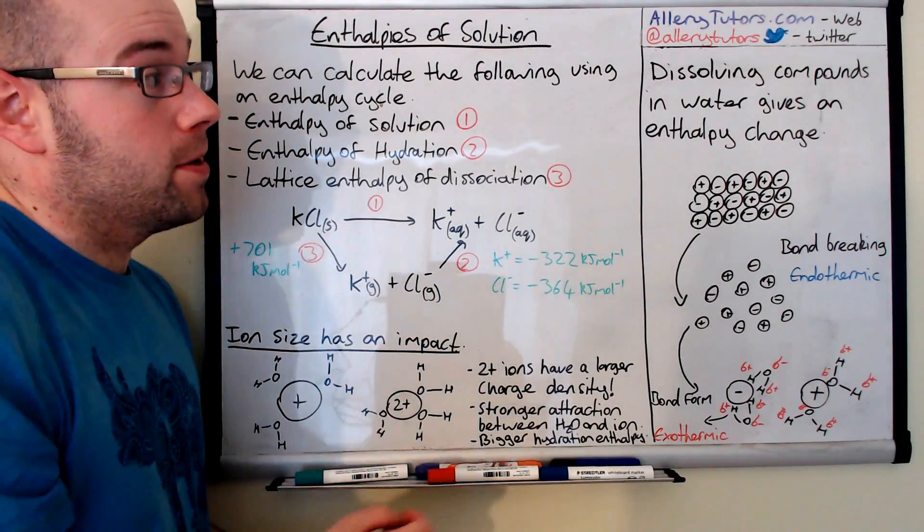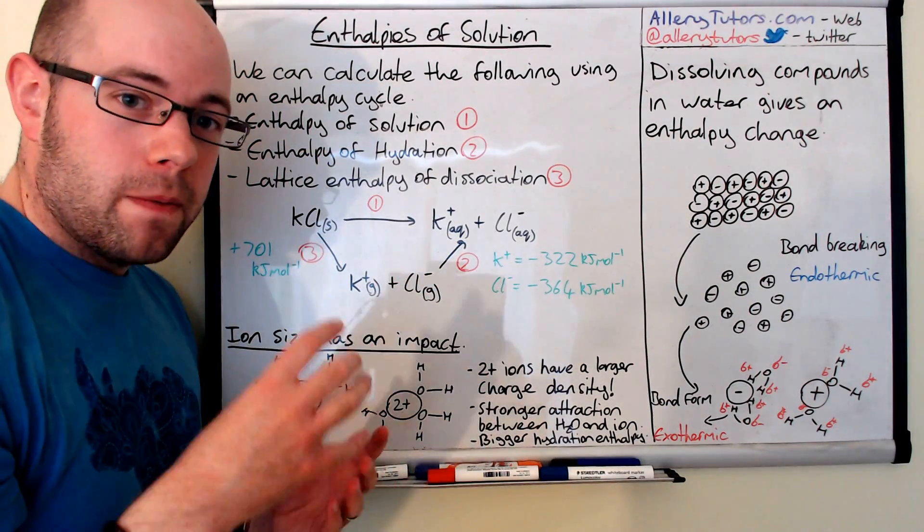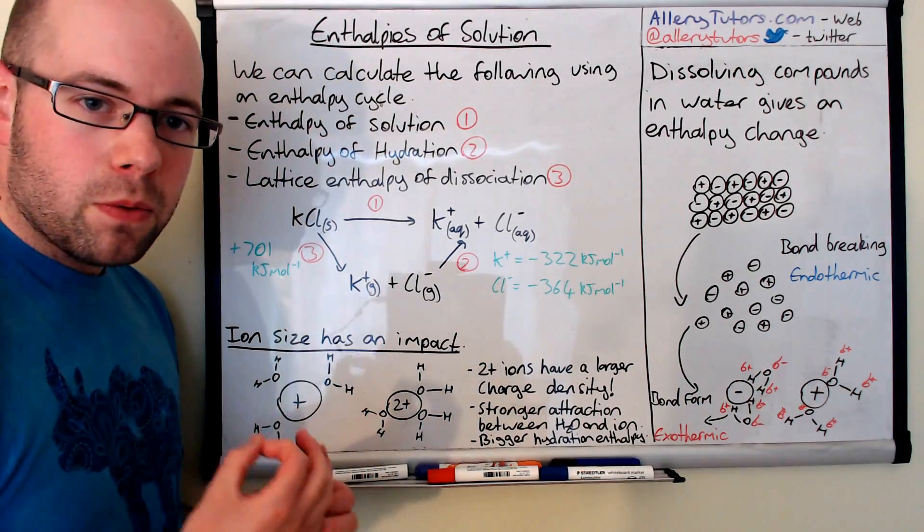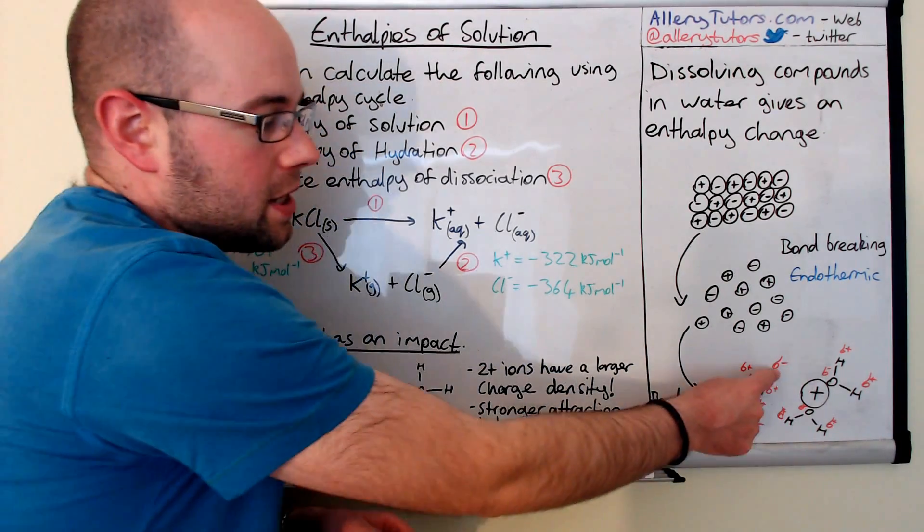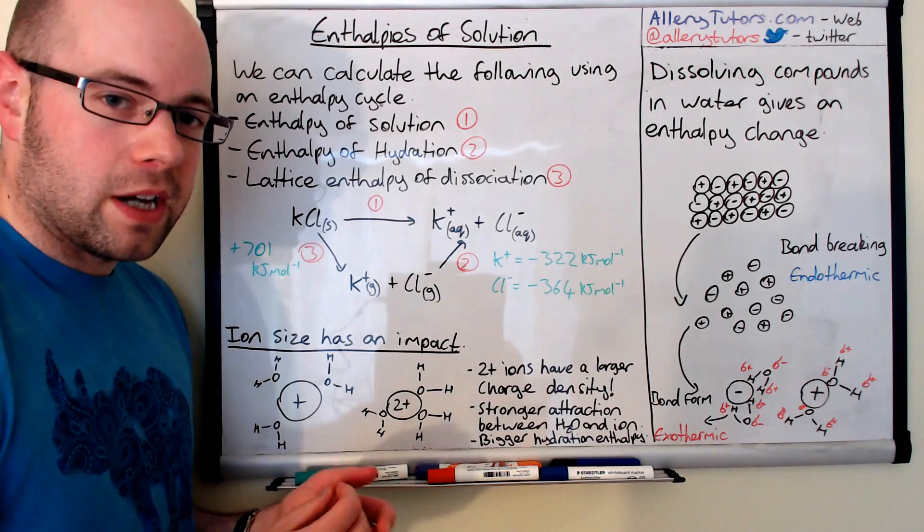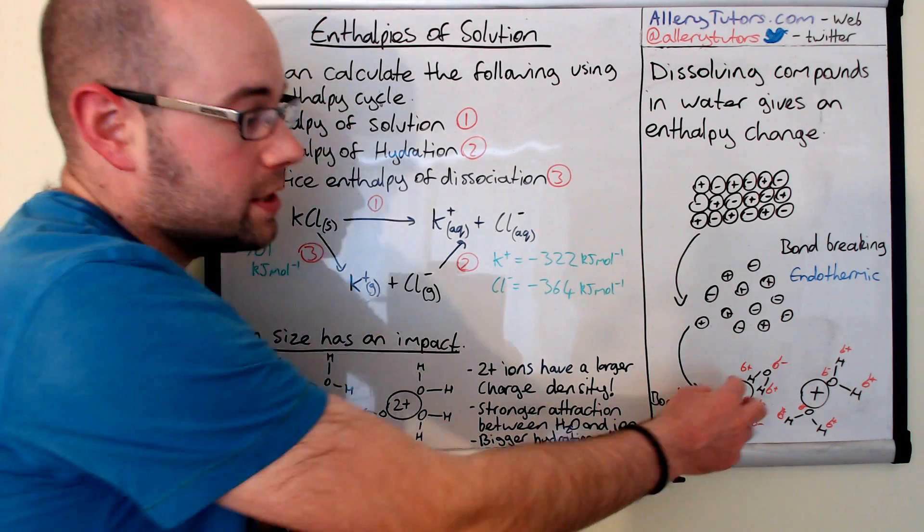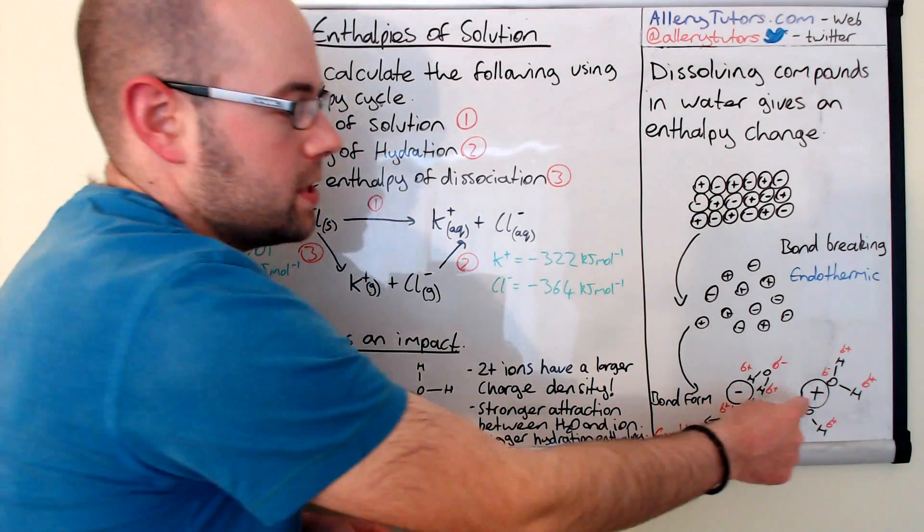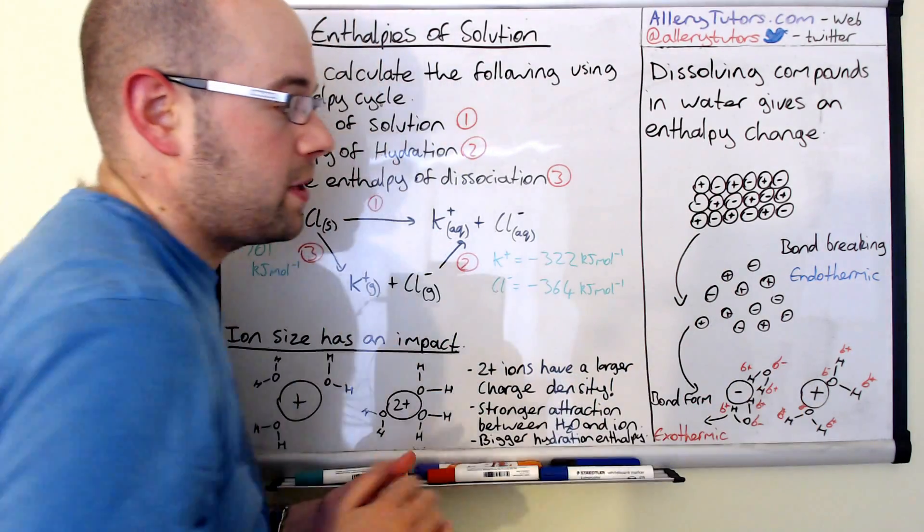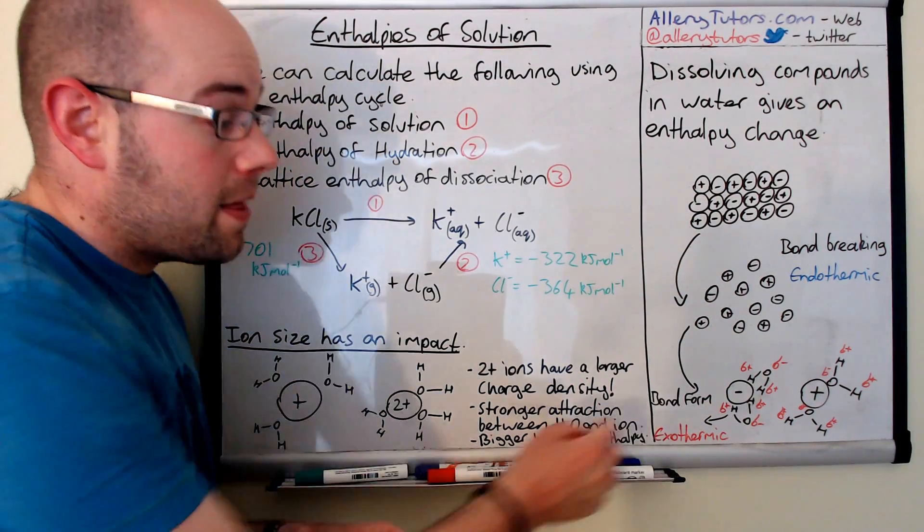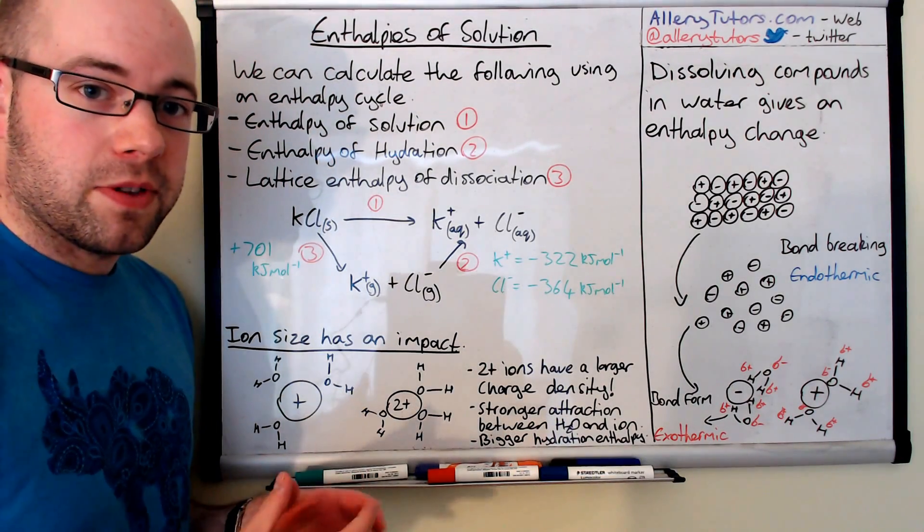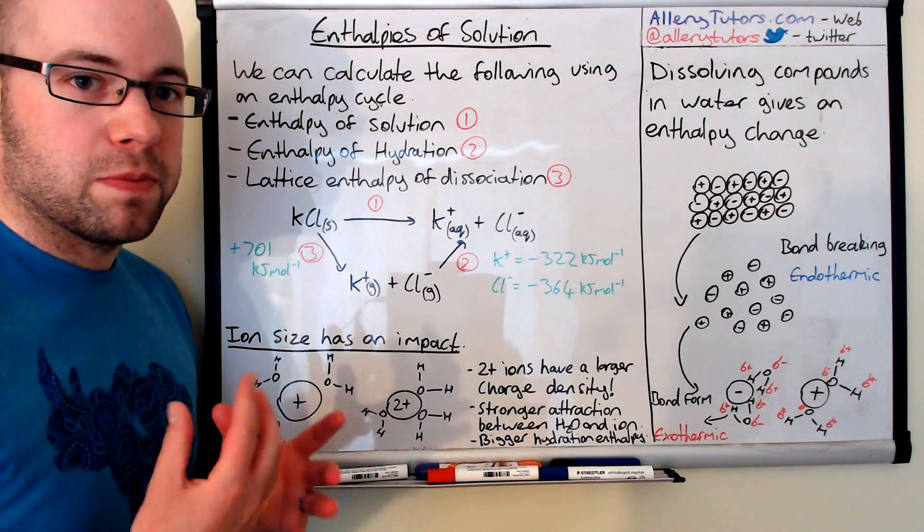If we carry on though, we've got water involved. Water effectively forms an attraction between the ions. Now we know that water is polar and it has a delta negative oxygen and a delta positive hydrogen. The delta positive hydrogens will be attracted to the negative ions from the compound and the delta negative oxygens will be attracted to the positive ions.